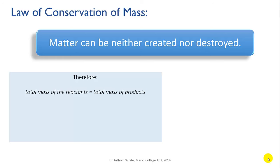This means that whenever a chemical reaction occurs, the total mass of the reactants must equal the total mass of the products, since mass cannot be gained or lost. And the reason the mass remains constant is that the atoms cannot be created or destroyed, only rearranged.